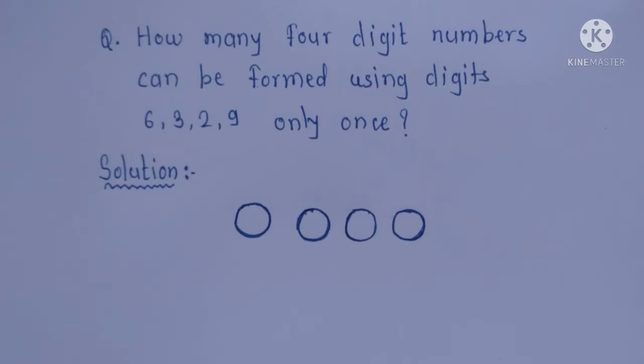Generally, to find the answer to this question, we need to form all the numbers and then count them. It will take more time, so we'll learn this trick here. 'Only once' means repetition of digits is not allowed. Here we have to form four-digit numbers, so I will draw here four circles.